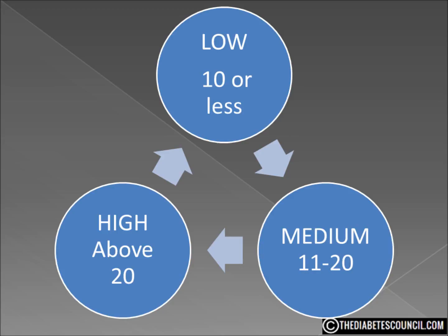Another example is the watermelon. The watermelon has a very high GI at 80, but a serving of watermelon only has 6 grams of net carbs and the glycemic load is only 5.